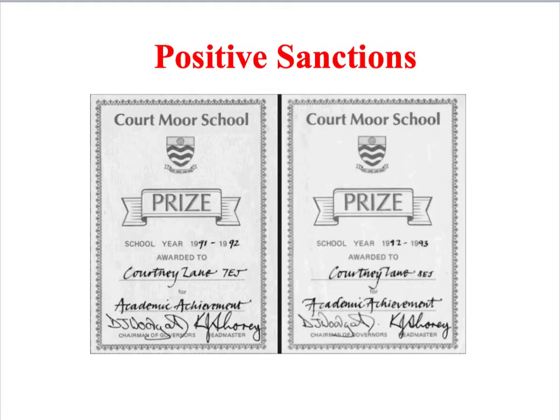A more subtle way in which social control works within particular social institutions is through the use of positive sanctions — the opposite of punishment. We're talking about various types of rewards for behaving in ways that are deemed socially acceptable. For example, if we look at most schools, alongside punishing students who don't abide by the rules, they will also find ways of rewarding students for good behaviour or good academic performance.